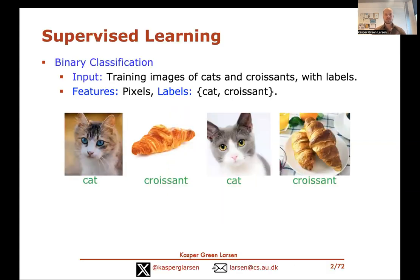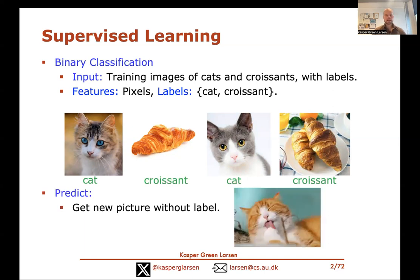The setup is a supervised learning setup focused on binary classification, where an example problem could be that you get training input images that are either images of cats or croissants. Each input image has a label — cat or croissant — and the features are the pixels of the image. The goal is to use this training data such that when we get a new picture without a label, we can predict whether it's a cat or a croissant.